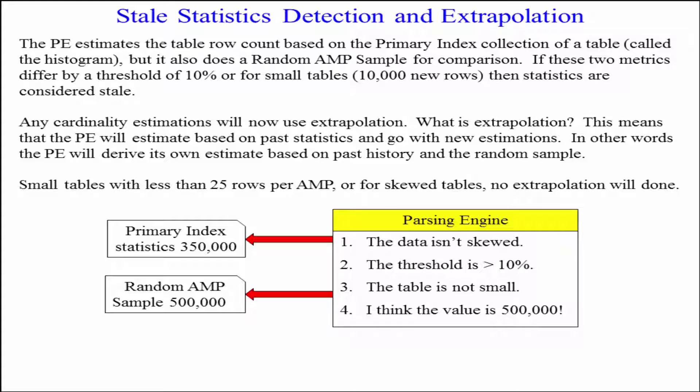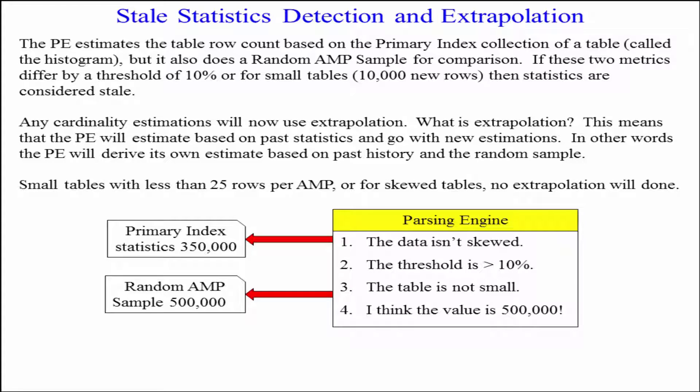They will usually take the primary index statistics to come up with table row counts, and that's what they're comparing to the random AMP sample after it does its multiplying by the number of AMPs. So if the parsing engine thinks the data isn't skewed that much but it's off by more than 10%, it's going to go with the random AMP sample.